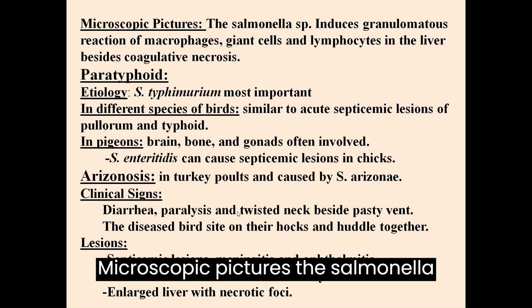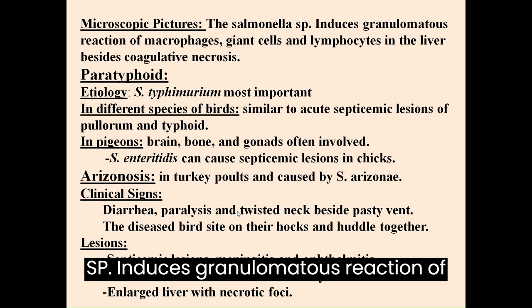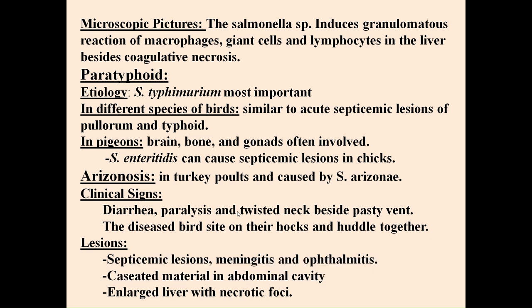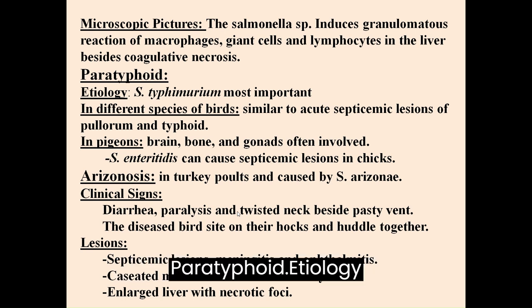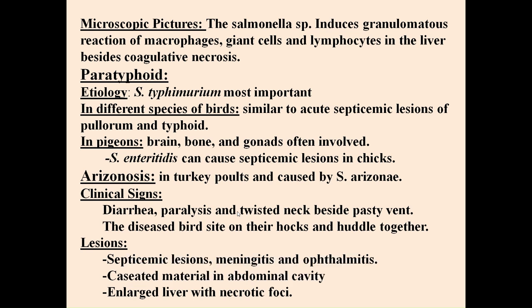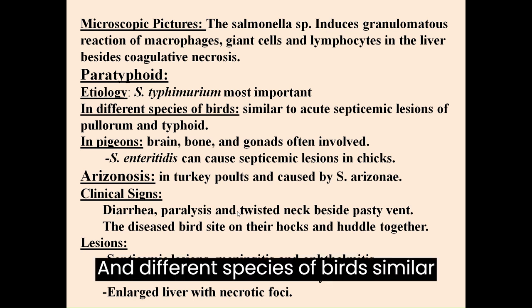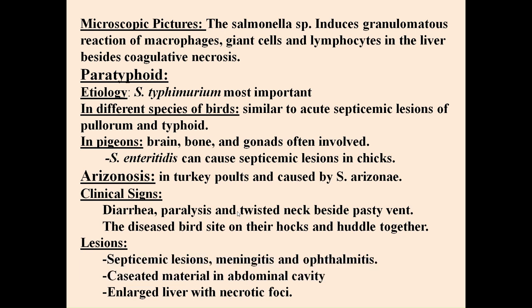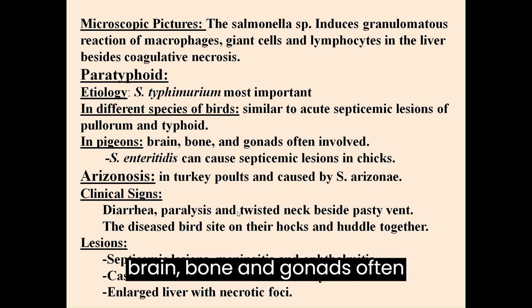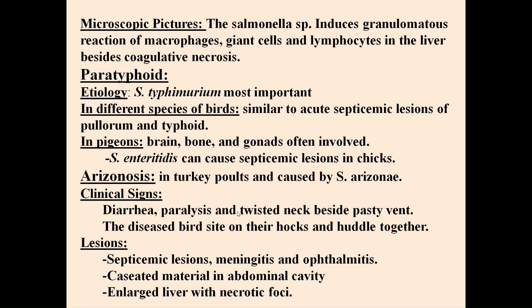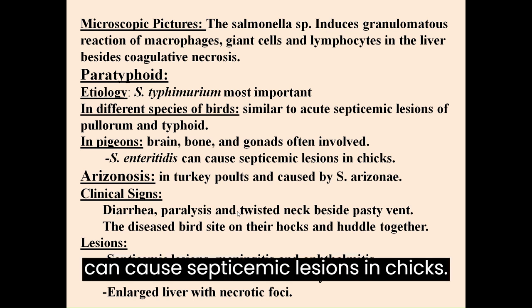Microscopically, Salmonella sp. induces granulomatous reaction of macrophages, giant cells and lymphocytes in the liver, besides coagulative necrosis. Paratyphoid: etiology is S. typhimurium (most important). In different species of birds, lesions are similar to acute septicemic lesions of pullorum and typhoid. In pigeons, brain, bone and gonads are often involved. S. enteritidis can cause septicemic lesions in chicks.